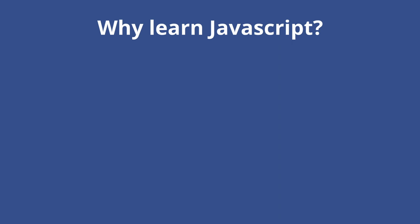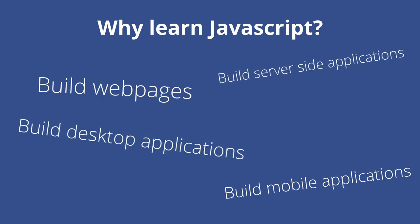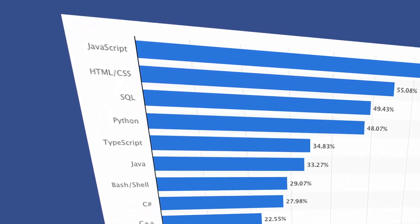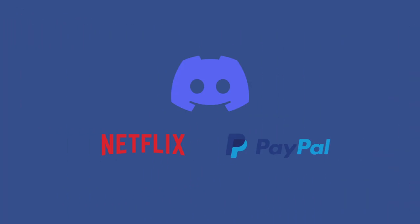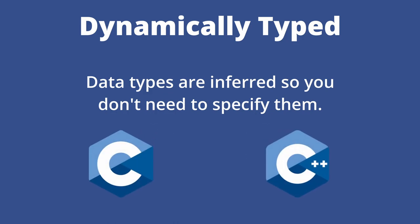JavaScript is used for a variety of purposes. A few of the many things you can do with JavaScript are to add interactivity to webpages, build server-side applications, create desktop applications, and create mobile applications. JavaScript ranks as one of the most popular programming languages and has been used to build lots of the webpages and software you use day to day. In technical terms, JavaScript is a dynamically typed language, which means you don't need to specify a data type when declaring a variable like you would in many other languages such as C, C++, and Java.